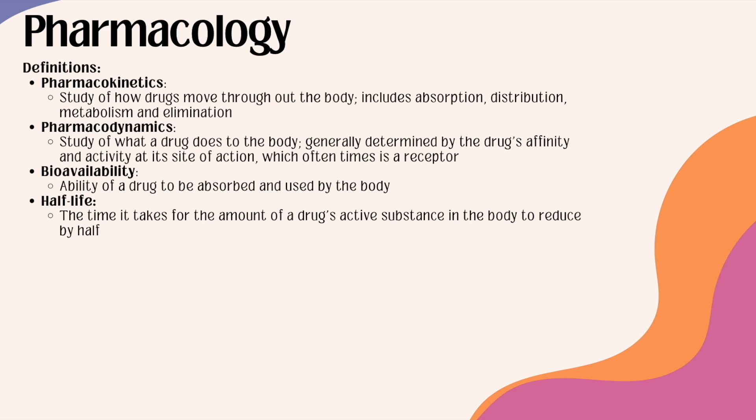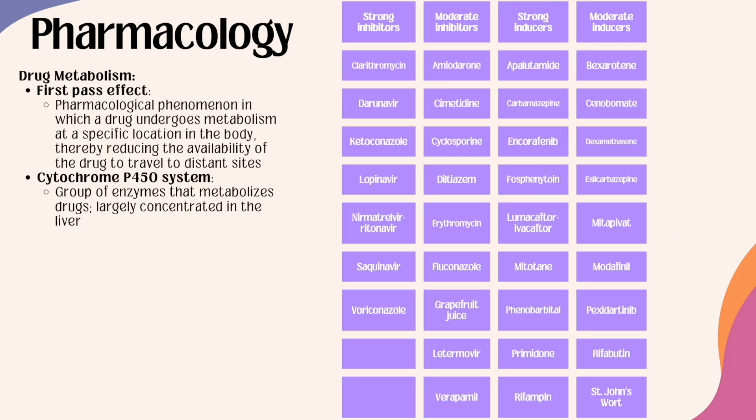Before we dive into the various medications and drug classes, I want to go over a couple of important concepts. The first pass effect is a pharmacological phenomenon in which a drug undergoes metabolism at a specific location within the body, thereby reducing its availability to travel to distant sites. This can occur at various sites, but it is largely due to the liver, because the liver is responsible for the selective uptake, concentration, metabolism, and excretion of the majority of drugs and toxins introduced into the body.